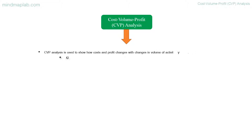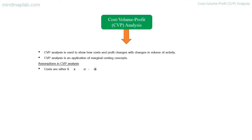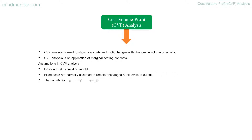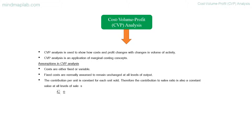CVP analysis is an application of marginal costing concepts. Assumptions in CVP analysis: costs are either fixed or variable. Fixed costs are normally assumed to remain unchanged at all levels of output. The contribution per unit is constant for each unit sold, therefore the contribution to sales ratio is also a constant value at all levels of sales.